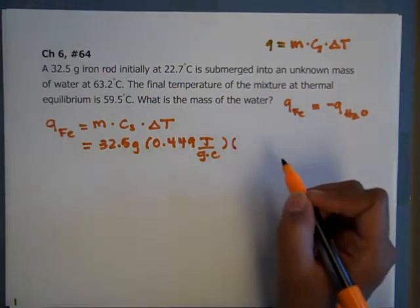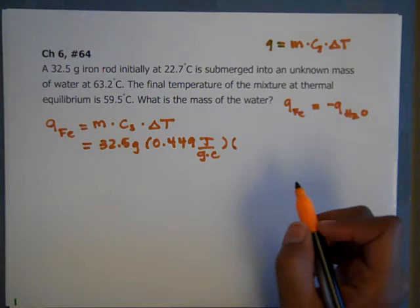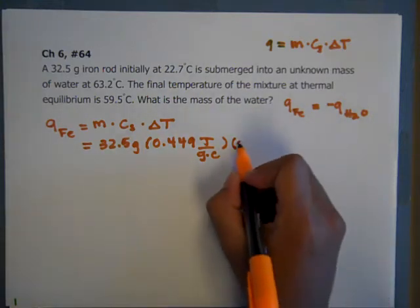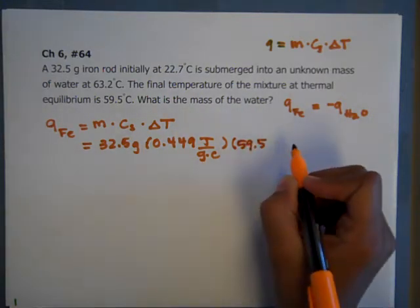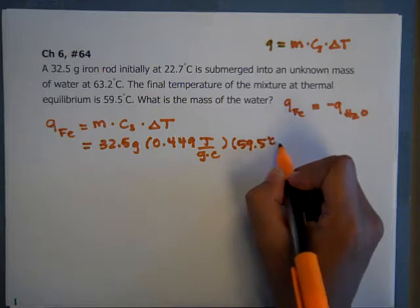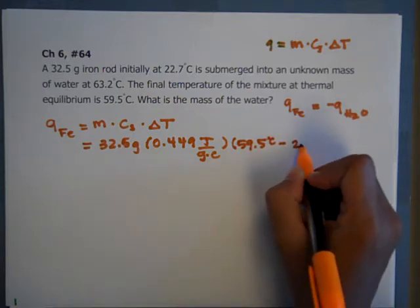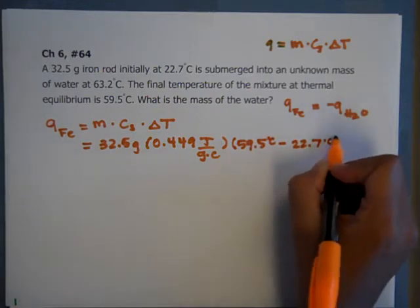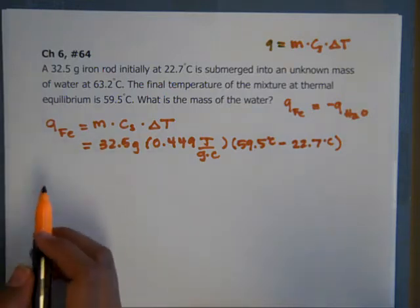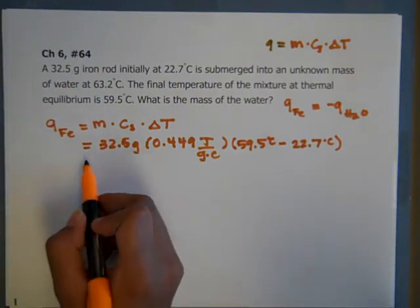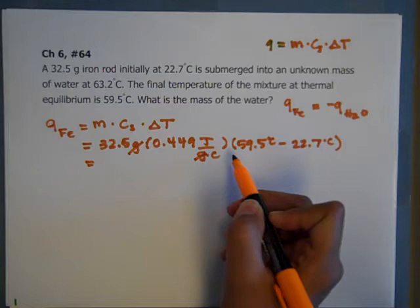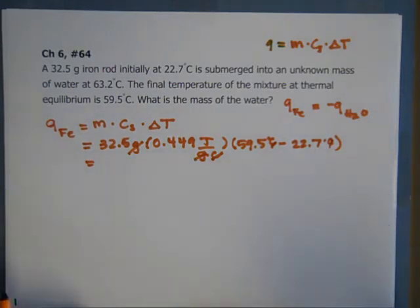And then we also need our delta T, which is usually final minus initial. So our final is 59.5 degrees Celsius minus 22.7 degrees Celsius. So that is how we're going to find Q of iron. And when we solve that all out, cancel the C's, and we're left with joules. Q usually should be in joules.